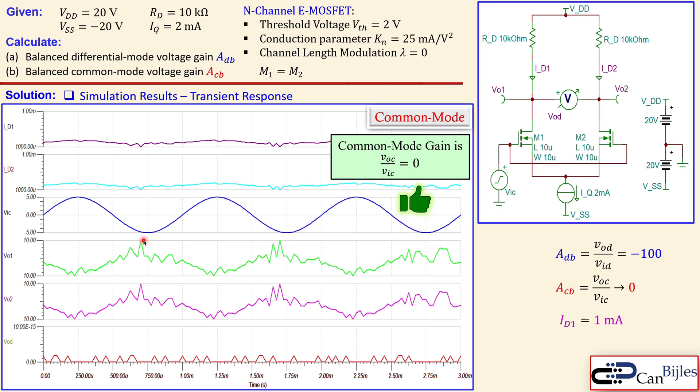All right, this was our first example about the MOSFET differential pair using the ideal current source and we have discussed the balanced differential mode and the balanced common mode voltage gains and now we can calculate the required DC operation for this circuit.